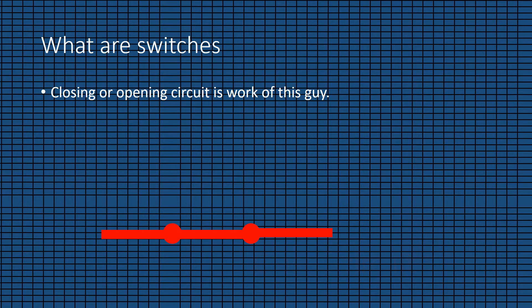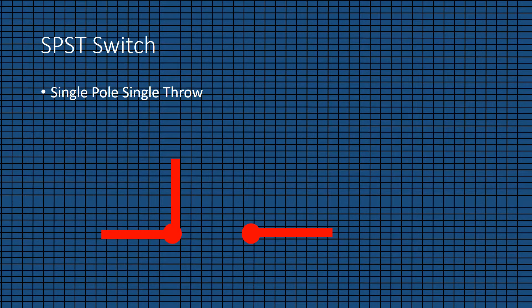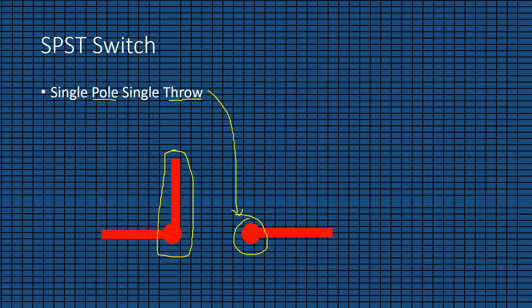Now let's start with our first type of switch — the SPST switch. What is the meaning of SPST? SPST is single pole, single throw. Let me explain what single pole and single throw mean. A throw can be defined as the circle in the switch diagram, and also as the number of presses. For this SPST switch we will consider the throw as the circle, and the pole is the arm of the switch. Let's see how the SPST switch works.